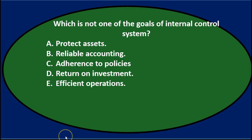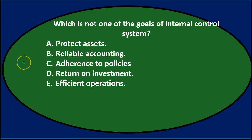First question: Which is not one of the goals of an internal control system? A. Protect assets. B. Reliable accounting. C. Adherence to policies. D. Return on investment. Or E. Efficient operations.